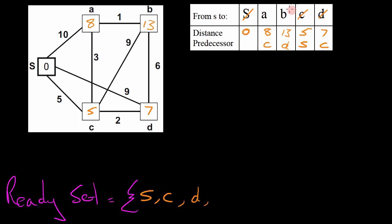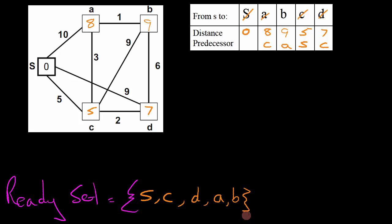There are only two nodes left and we select the node with the smallest distance, which is node A. Starting at node A, we look at its neighboring nodes. S is connected but already in the ReadySet. The only node not in the ReadySet is B. Taking the distance value of A and adding 1 to it, we get a value of 9, which is less than 13, so we update the value of B to 9 and change the predecessor of B to A. We don't find any other nodes connected to A, so A is done and added to the ReadySet. The only one left is B, and we add B into our ReadySet.